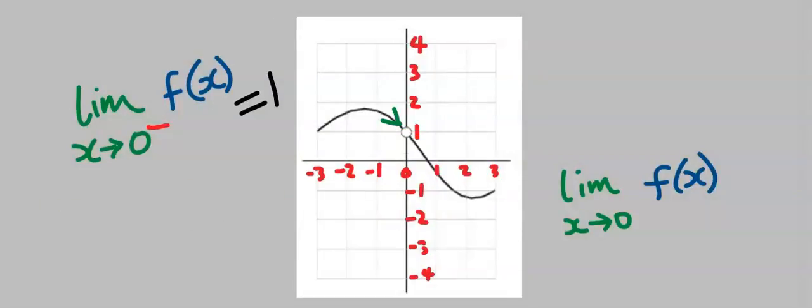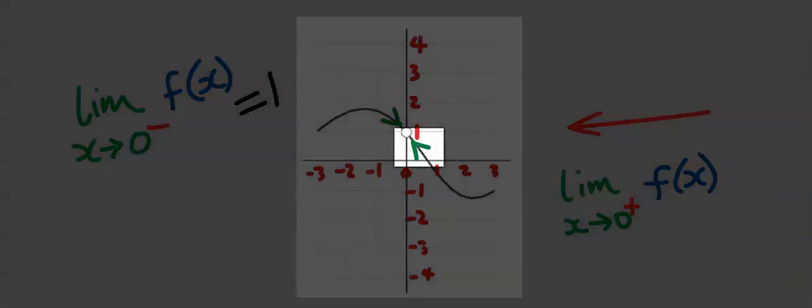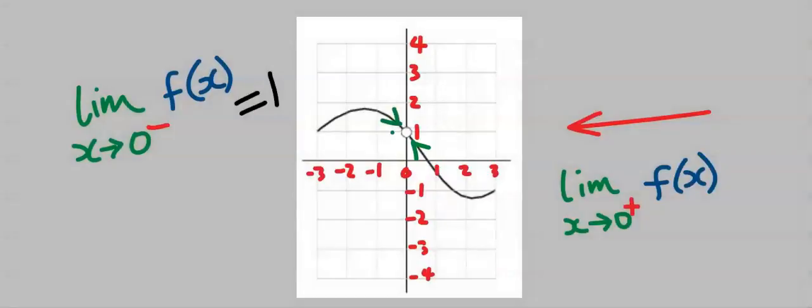Next we are going to approach this limit from the right, hence I will put a plus here. As we approach the limit from the right, we are still going to encounter the same point which is one, hence our answer to this limit is one.